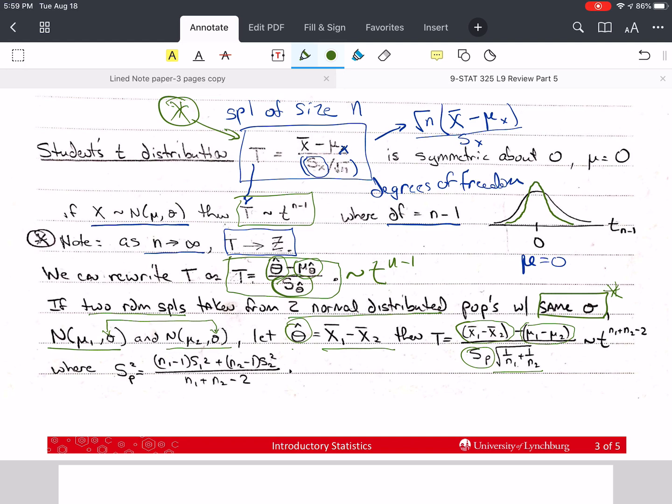And it turns out that the standard deviation of x bar 1 minus x bar 2, if the variances are equal, or if the standard deviations are equal, is s sub p times the square root of 1 over n plus 1 over n2. And s sub p is what we call the pooled sample variance. And so, we take n1 minus 1 times s1 squared plus n2 minus 1 s2 squared all over n1 plus n2 minus 2. And so, this t statistic here is a t with n1 plus n2 minus 2 degrees of freedom.